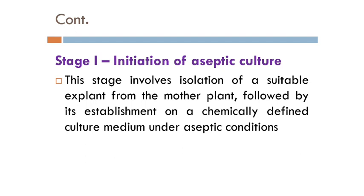Stage 1 is initiation of the aseptic culture. This stage involves isolation of a suitable explant from the mother plant, followed by its establishment on a chemically defined culture medium under aseptic conditions. The explant is collected from field or greenhouse-cultivated plants, and after surface sterilization, the explant is inoculated onto the nutrient medium for the initiation process.